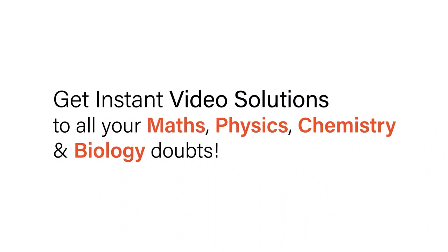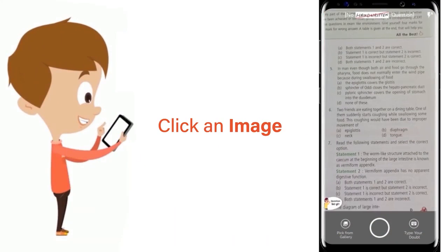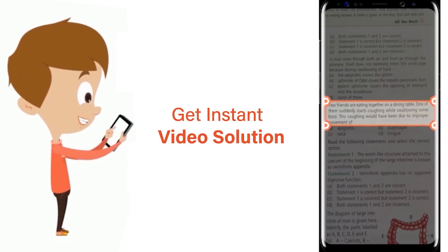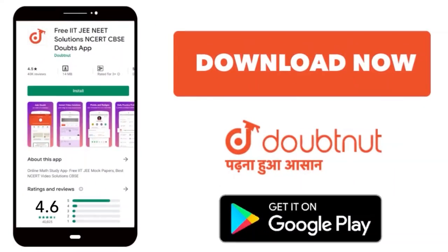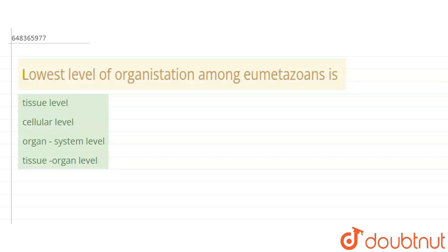With Doubtnet, get instant video solutions to all your maths, physics, chemistry, and biology doubts. Just click the image of the question, crop it, and get an instant video solution. Download Doubtnet app today. The question is: lowest level of organization among the umetazoans is?